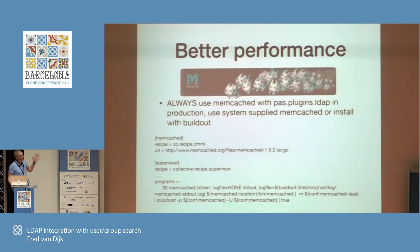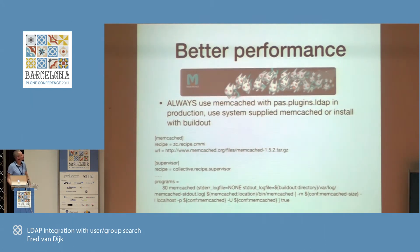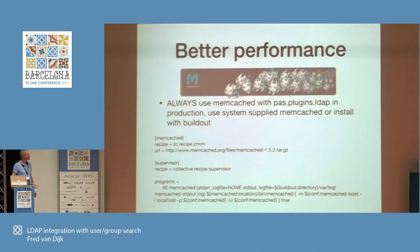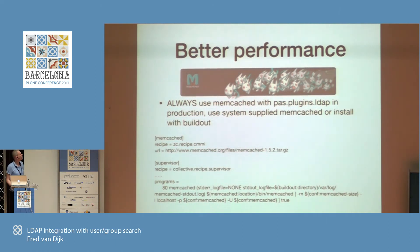I already talked a bit about performance. If you really want to have a very large directory, use Memcached. I talked with the developer of PassPlugins LDAP this morning — Jens — and he said always use Memcache, never leave home without it, always activate Memcache because otherwise performance will be horrible. Very easy to set up — most Unix systems already have it. This is a small snippet you could use in buildout if you want to set up a local Memcached server.